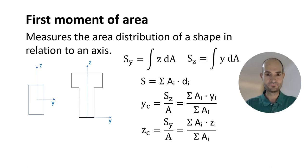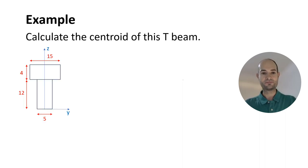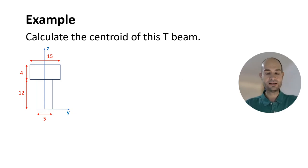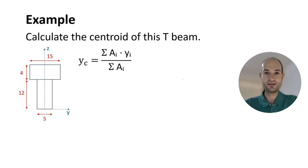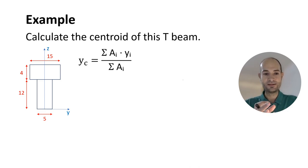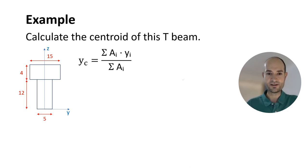Let me do an example: calculate the centroid of this T-shape. We have this shape divided into two rectangles. We know the centroid on the y-axis is the summation of the different areas times their distance on the y-axis. Since the shape is symmetrical, we already know that for y it's going to be 0 — y equals 0 is the central axis, the z-axis. So this value here is going to be 0; the centroid will be somewhere along the z-axis.